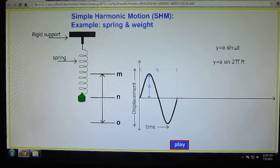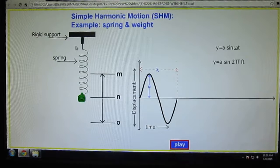Here on the screen the heavy mass moves up and down in a vertical line. You can see a rigid support here, a spring attached to the support here, a mass or weight. Here n is the mean position, m is upward displacement, and o is downward displacement.